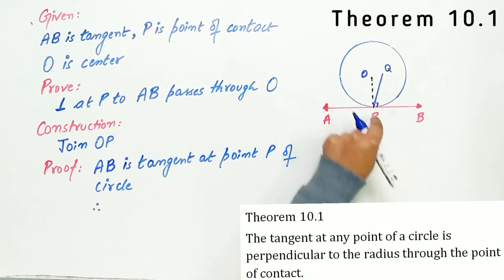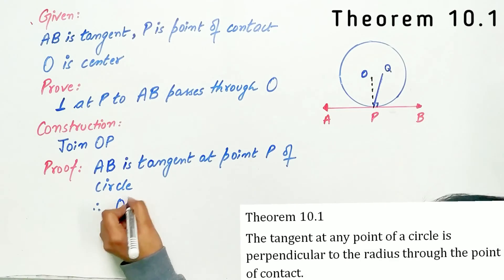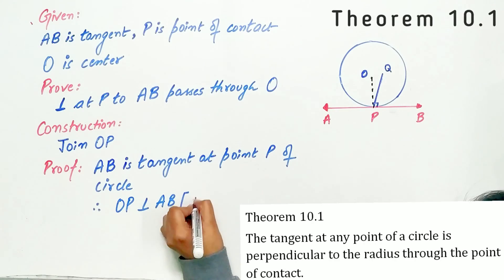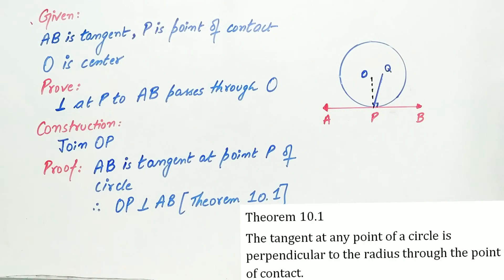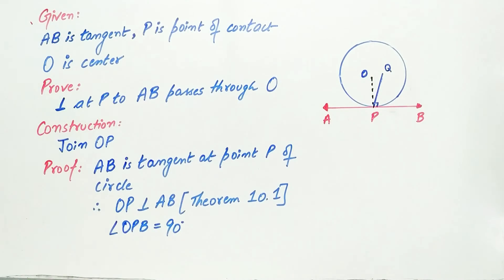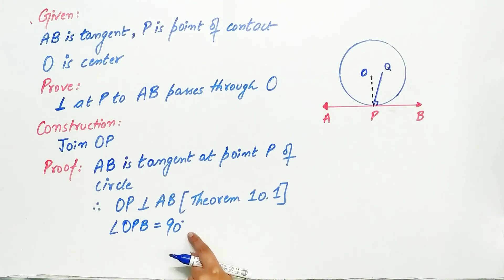Hence OP is perpendicular to AB via theorem 10.1 that says the tangent at any point of circle is perpendicular to the radius through the point of contact. Hence angle OPB is equal to 90 degrees.